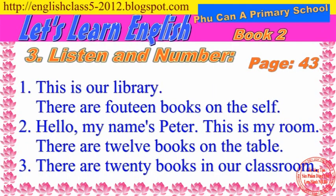Page 43, exercise 3. Listen and number. 1. This is our library. There are 14 books on the shelf. 2. Hello, my name's Peter. This is my room. There are 12 books on the table. 3. There are 20 books in our classroom.